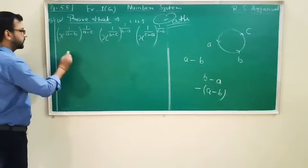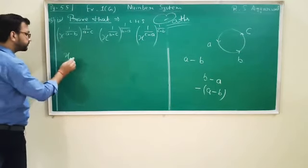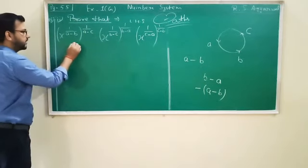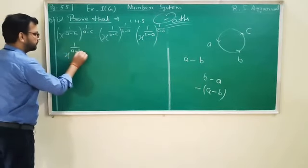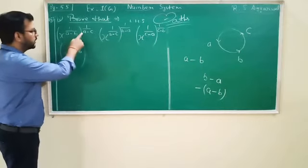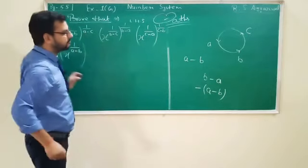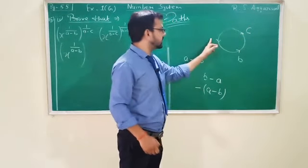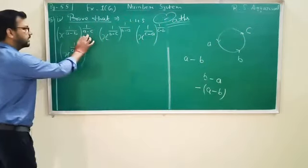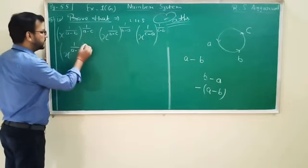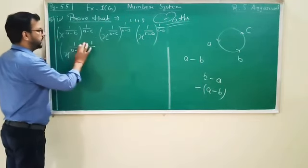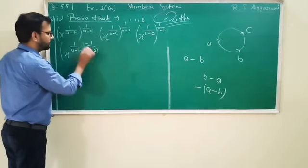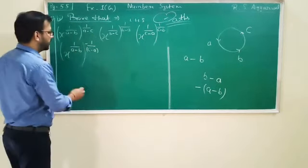X to the power — here the exponent is A minus B. A के बाद sequence में B है, so no change needed. Here is A minus C — but it should be C minus A. So we take minus common here, making it minus of (C minus A). Value is placed in the middle: this is C minus A.